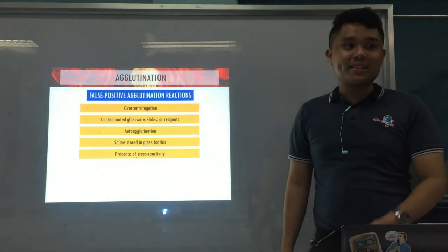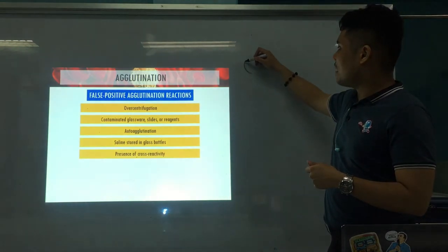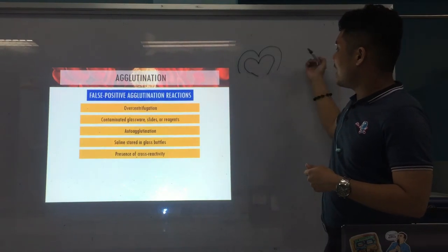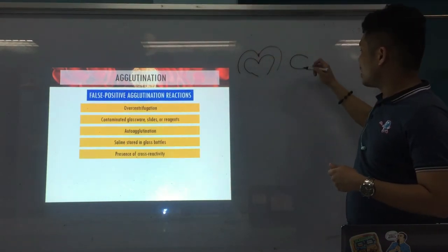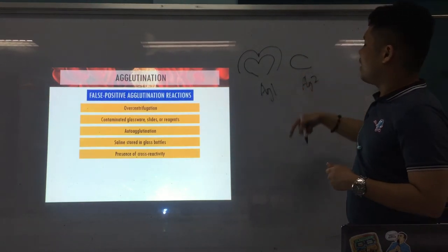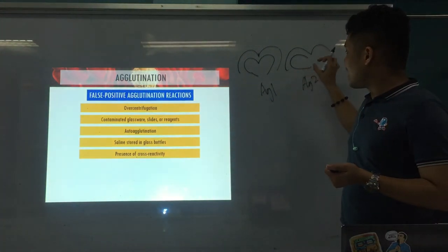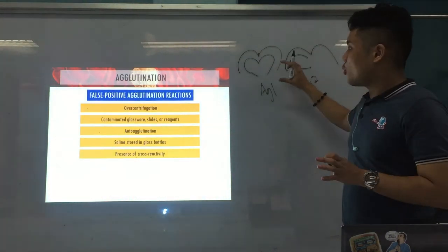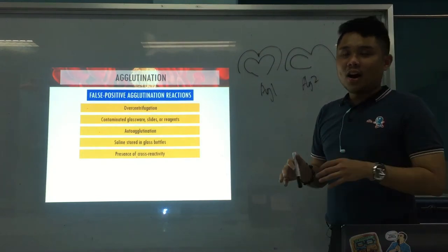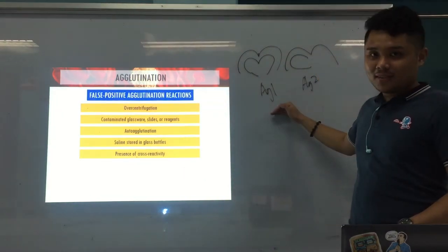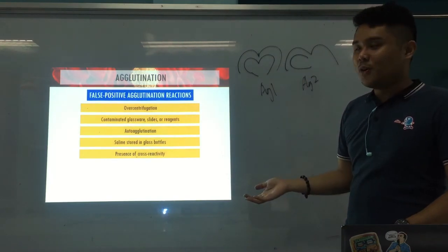Presence of cross-reactivity: an antibody testing for one antigen may also react with another antigen that has a similar appearance. If the antibody reacts with a partial or similar antigen, it still produces a positive result even though the target antigen is not truly present. This can lead to a false positive and misdiagnosis.